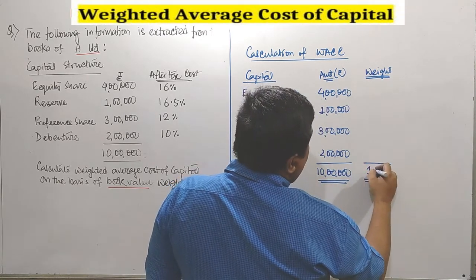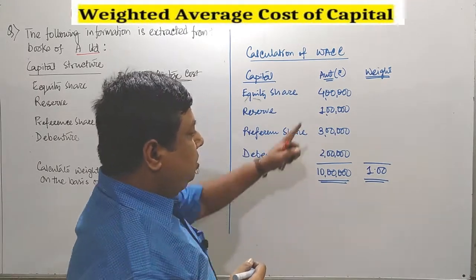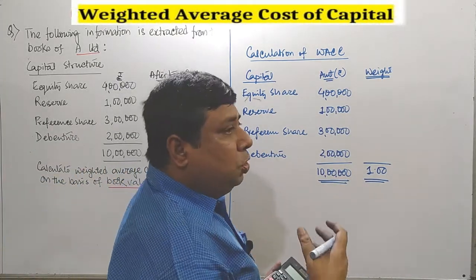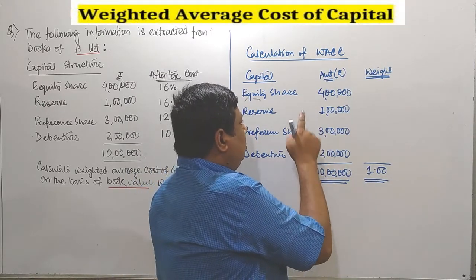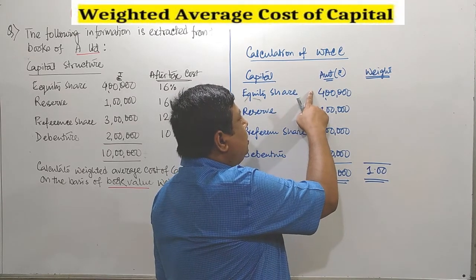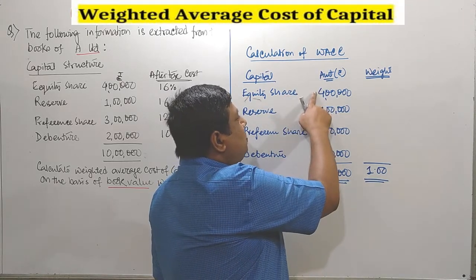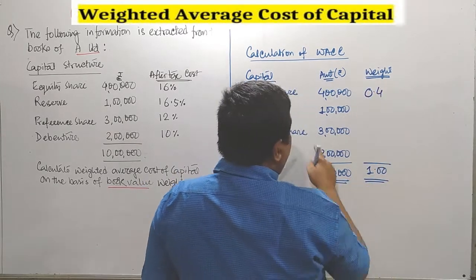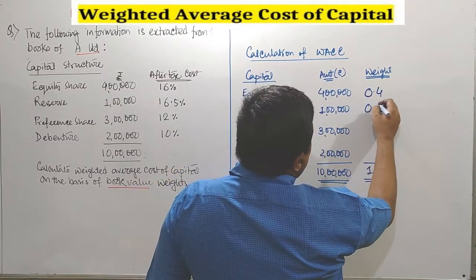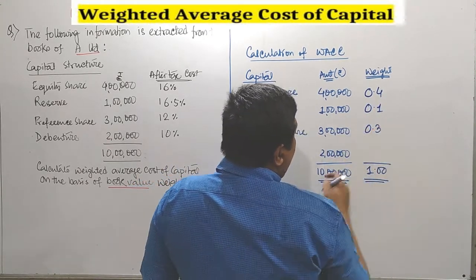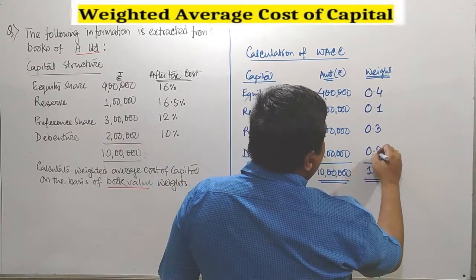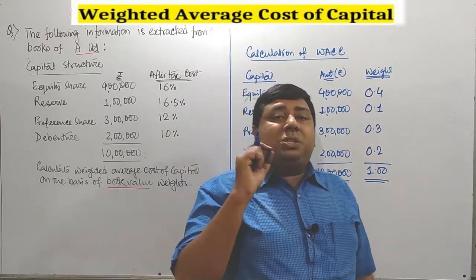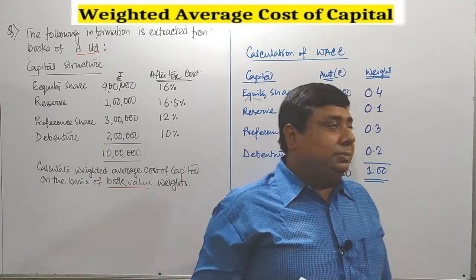How to get the weight column? The total figure you have to consider as one, and based on that you have to calculate the proportion of each and every component — what is the contribution of each component in the overall capital. You have to divide the specific capital component by the total amount. For equity share: 4 lakhs divided by 10 lakhs gives 0.4. For reserve: 1 lakh divided by 10 lakhs gives 0.1. Preference share: 3 lakhs divided by 10 lakhs gives 0.3. Debenture: 2 lakhs divided by 10 lakhs gives 0.2.